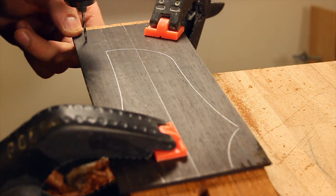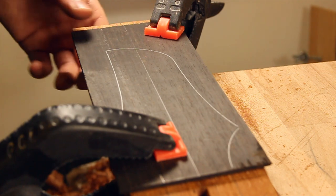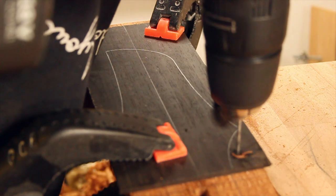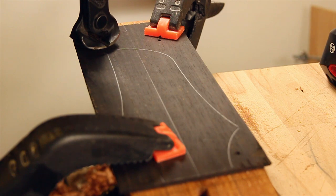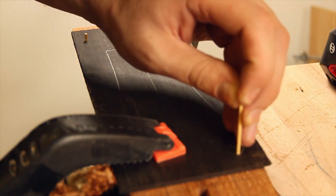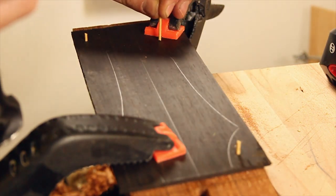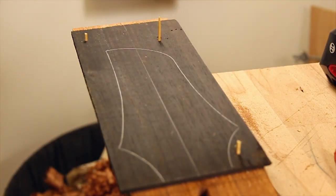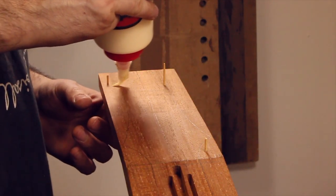I like to drill locating holes to stop the veneer from slipping when glue is applied. It's strange how glue acts as a lubricant before an adhesive. The locating pins are simply toothpicks which can be glued with the veneer. Three might be slightly overkill but better safe than sorry.